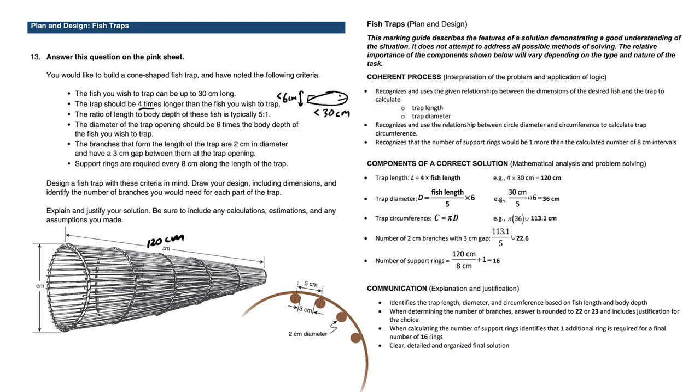The ratio of length to body depth of these fish is typically 5 to 1. So this is 30 centimeters and if the height is only 1 fifth of that, 30 divided by 5 is 6. The diameter of the trap opening which is going to be here should be six times the body depth of the fish you wish to trap. Six times six is 36.